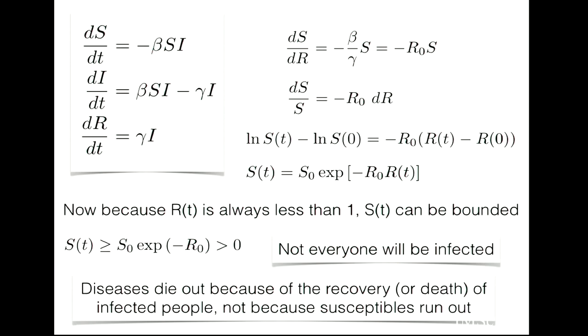In succeeding lectures, we will discuss how to make the model more complex: what vaccination does within the context of this model, how it affects numbers of people, what herd immunity is, and further mathematical results. We will also discuss age-structure models, network models, and agent-based approaches. This has been a quick introduction to the SIR model and its relevance to understanding the broad contours of how disease spreads within a population.